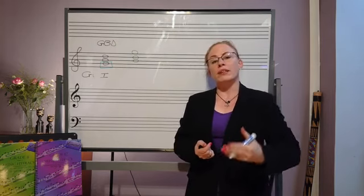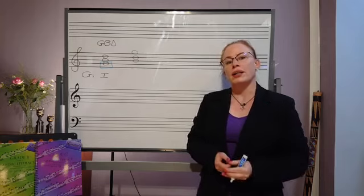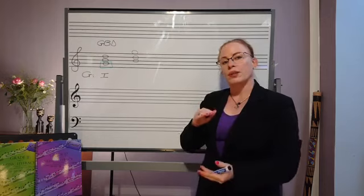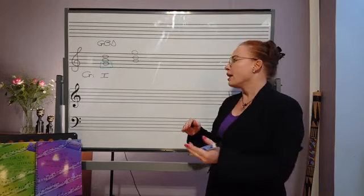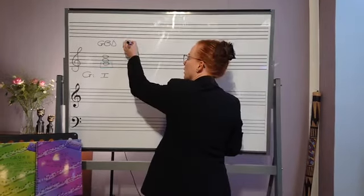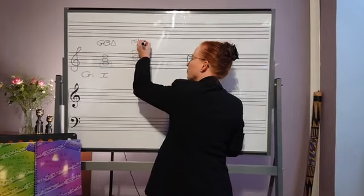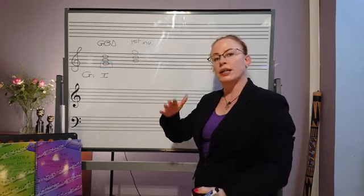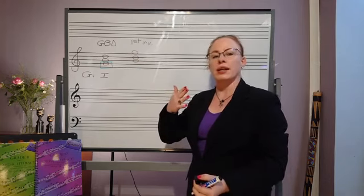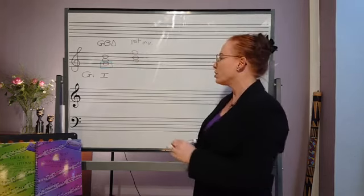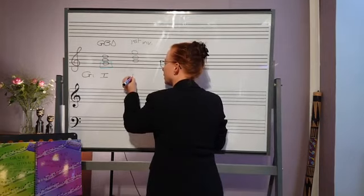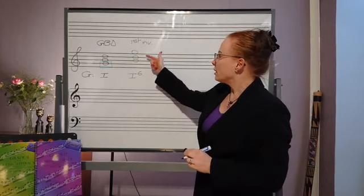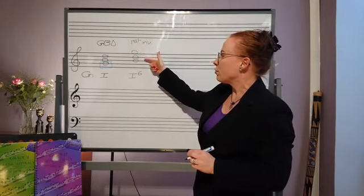So the notes that I have is still G-B-D, it's still my tonic triad. However, the position just changed. We have a different note now in the bass. So whenever the third is the lowest note of the triad, then we say it is first inversion. So whenever the third of the triad is in the bass, the lowest note, then it is going to be in first inversion, and the way we indicate it is like this.